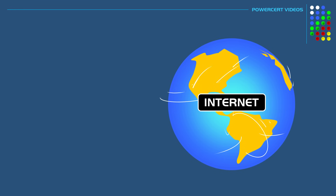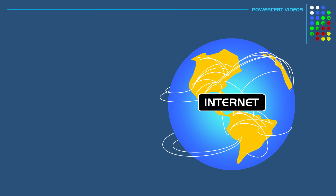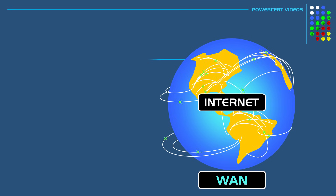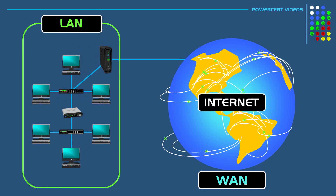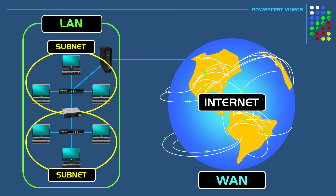So as a review: the internet, with all of its computers, servers, and routers, is an example of a wide area network. But within that wide area network we have local area networks — these are private networks that are in organizations, businesses, and homes. And within those LANs we have subnets, which are divisions of larger networks.